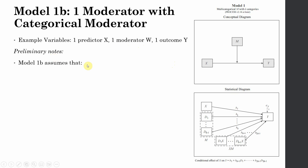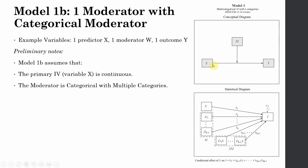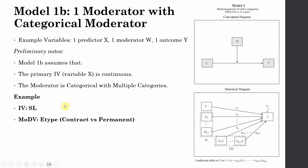Preliminary notes: Model 1 assumes that the primary independent variable is continuous — that is, your X is continuous. Your moderator is categorical with multiple categories, and your dependent variable is also continuous. In this particular example, the IV will be SL — Servant Leadership. The moderating variable is employment type, that is contract versus permanent. And the dependent variable is knowledge worker loyalty.